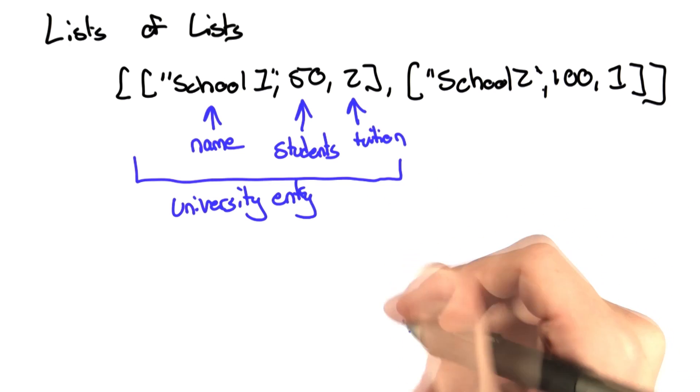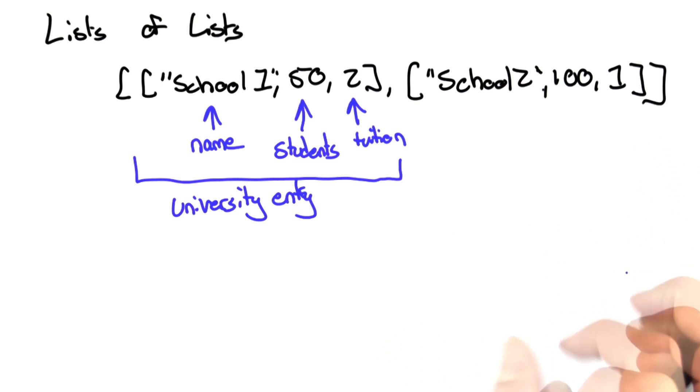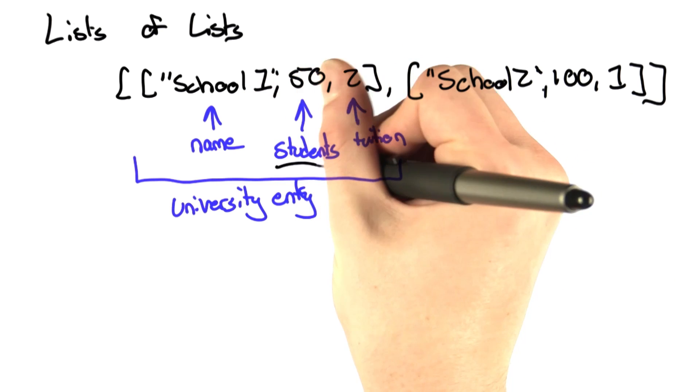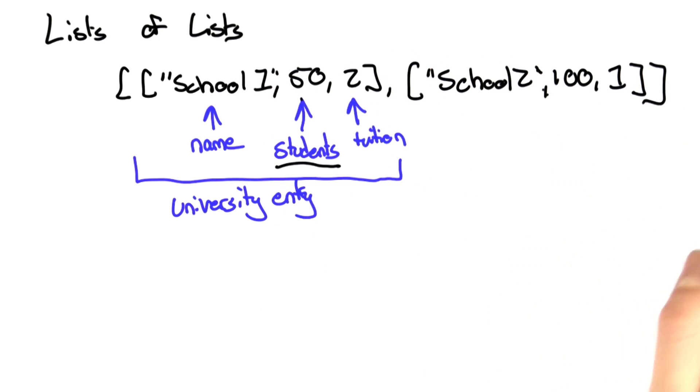What we want to calculate are the total number of students enrolled at all the universities in this list and the amount of money that all of them are paying. What we're going to do is sum the number of students, so we're going to keep track of all the students and keep adding for each university this second value in the list.